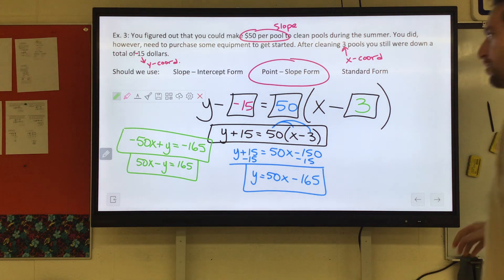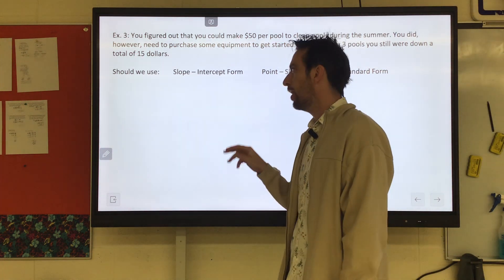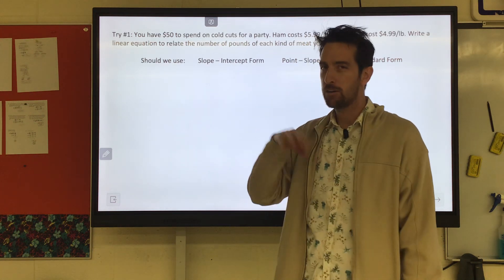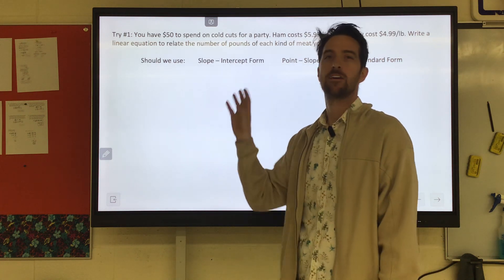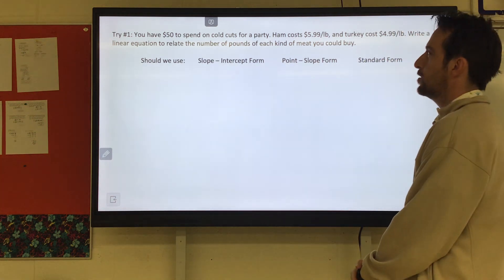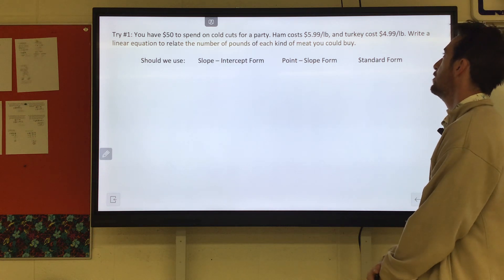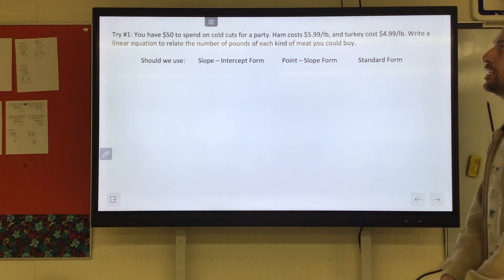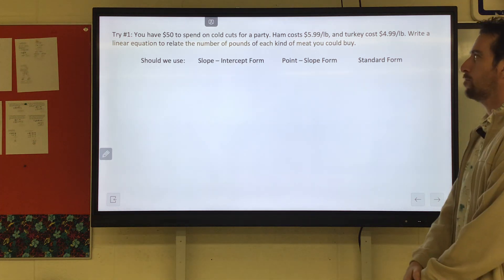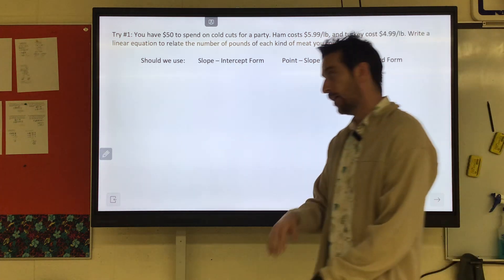So there are two here for you to try. You've got the notes, but I'll read you the first one. Pause it. Try it. I'll read you the second one. Pause it. Try it. Try number one. You have $50 to spend on cold cuts for a party. Ham costs $5.99 a pound. Turkey costs $4.99 a pound. Write a linear equation to relate the number of pounds of each kind of meat you could buy. Pause it. Try it.